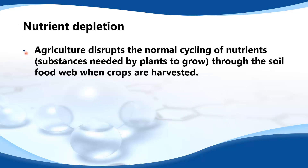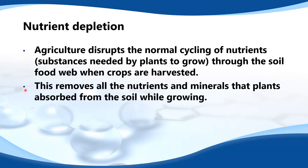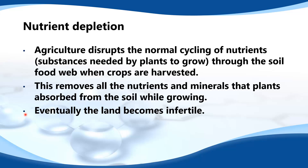Next is nutrient depletion. Agriculture disrupts the normal cycling of nutrients — substances needed by plants to grow — through the soil food web when crops are harvested. This removes all the nutrients and minerals that plants absorbed from the soil while growing. Eventually the land becomes infertile.